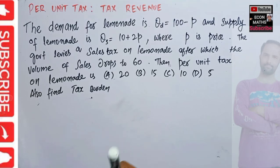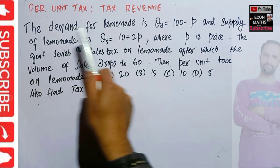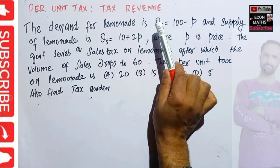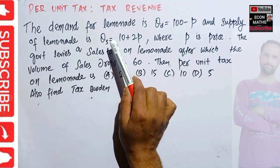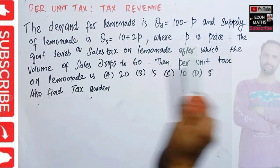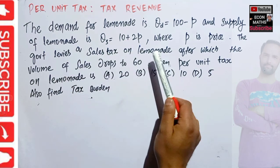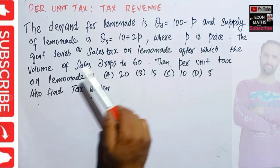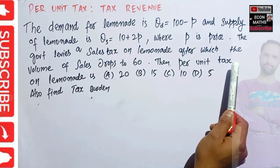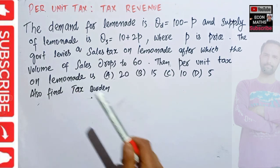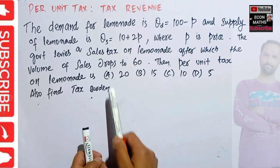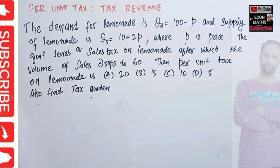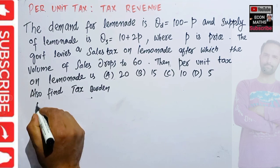In this video we will solve a numerical problem on the imposition of per unit tax on supply function. The demand for lemonade is given as QD = 100 minus P, where P is the price, and the supply function is given as QS = 10 plus 2P. The government levies a sales tax on lemonade after which the volume of sales drops to 60. We have to find the per unit tax — is it twenty, fifteen, ten, or five dollars — and also find the tax burden.